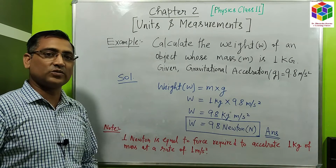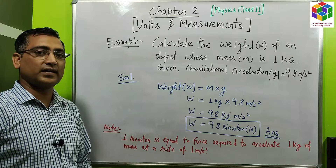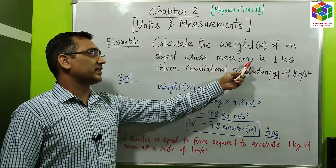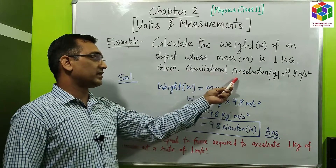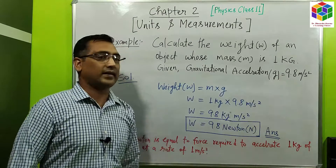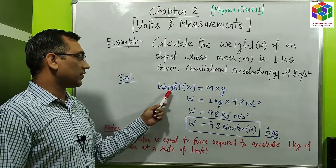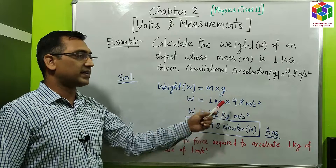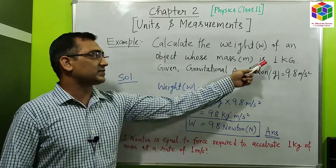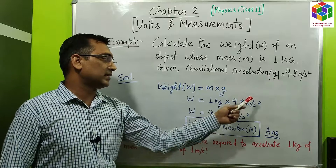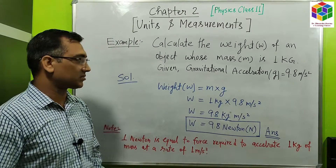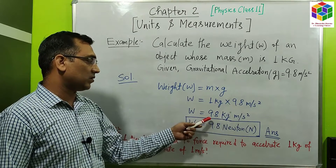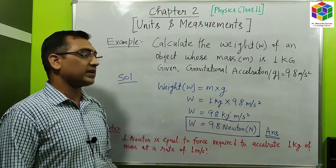Now let us do one numerical example to calculate the weight of an object. Calculate the weight of an object whose mass is given as 1 kilogram and the gravitational acceleration constant is 9.8 meter per second square. We know the formula of weight is equal to m into g — that is mass into gravitational acceleration. Mass given is 1 kilogram and gravitational acceleration is 9.8 meter per second square. So the weight of the object will be equal to 1 multiplied by 9.8, that is 9.8 kilogram into meter per second square.